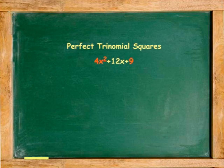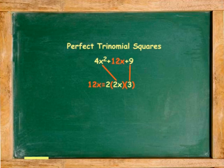The middle term is 12x, which is twice the product of the square root of the first term, which is 2x, and the square root of the last term, which is 3.